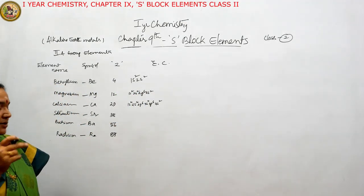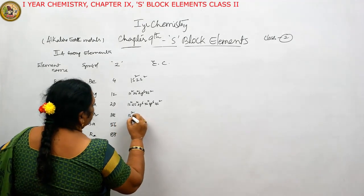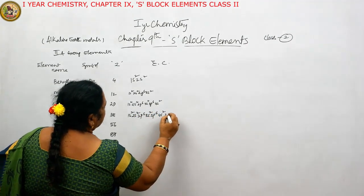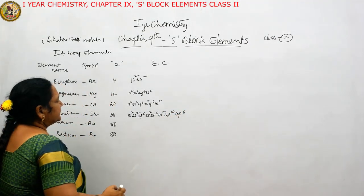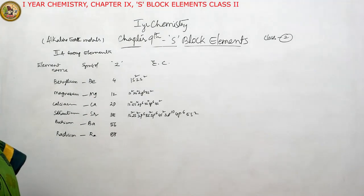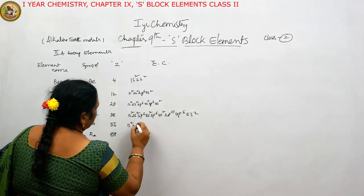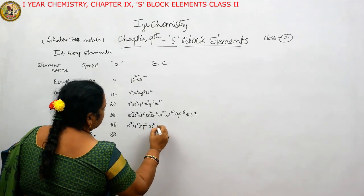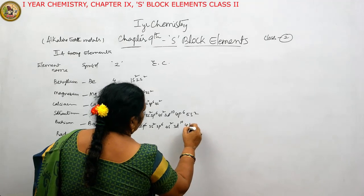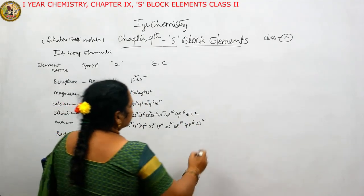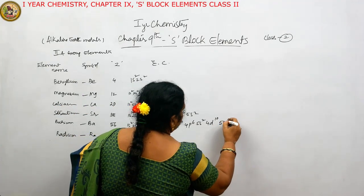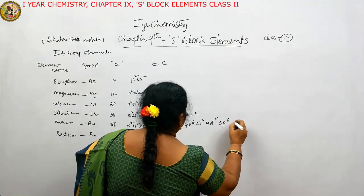For strontium (Z=38): 1s², 2s², 2p⁶, 3s², 3p⁶, 4s², 3d¹⁰, 4p⁶, 5s². For barium (Z=56): 1s², 2s², 2p⁶, 3s², 3p⁶, 4s², 3d¹⁰, 4p⁶, 5s², 4d¹⁰, 5p⁶, 6s².